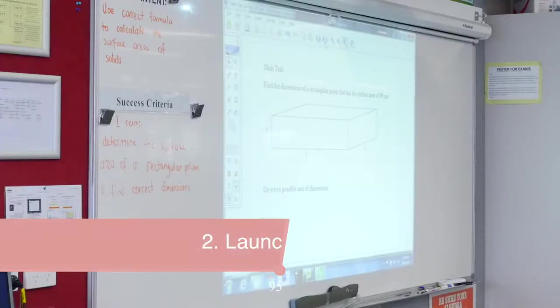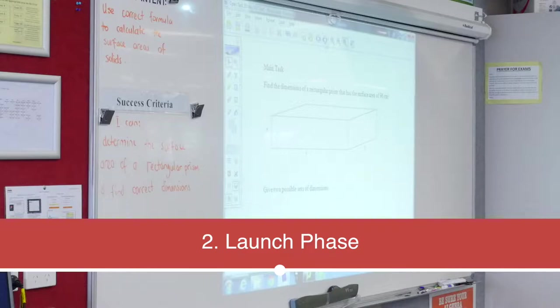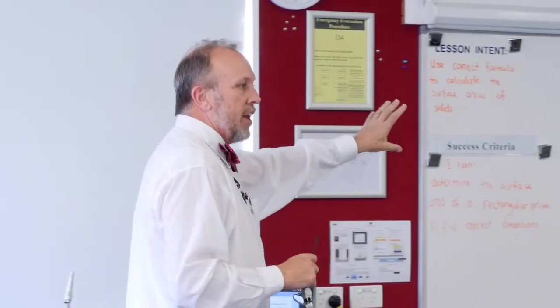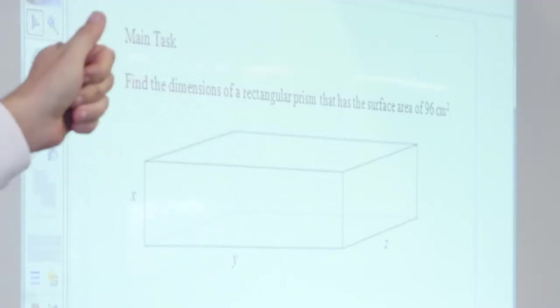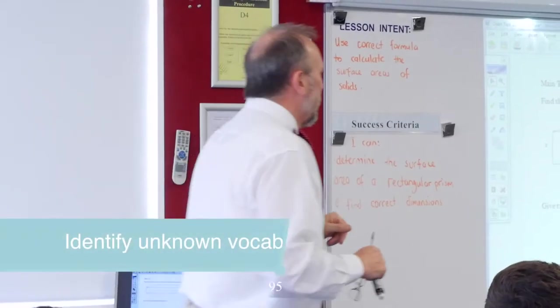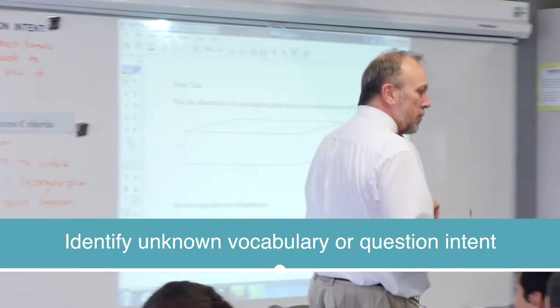So what I want you to do is start off with, have a look at our main task to start. So read through it. So what words don't we understand first? Is there any words that we don't understand there? How do you find the surface area? Well that's what I'm going to need you to be able to work out.